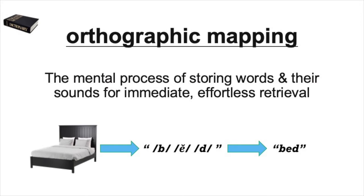Another new term for this video is orthographic mapping. Orthographic mapping is the name for a mental process of learning and storing sound-spelling connections, like knowing that the grapheme or letter B makes the B sound. As children's phonemic awareness skills grow over time, their orthographic mapping enables them to effortlessly remember or retrieve those links so that they can sound out words more quickly.